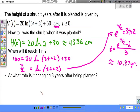At what rate is it changing 3 years after being planted? Rate. Derivative. Find the derivative. Pause the video. Take this derivative. So 20 times the derivative of natural log of 3t plus 2. So 1 over 3t plus 2 times the derivative of what's inside.